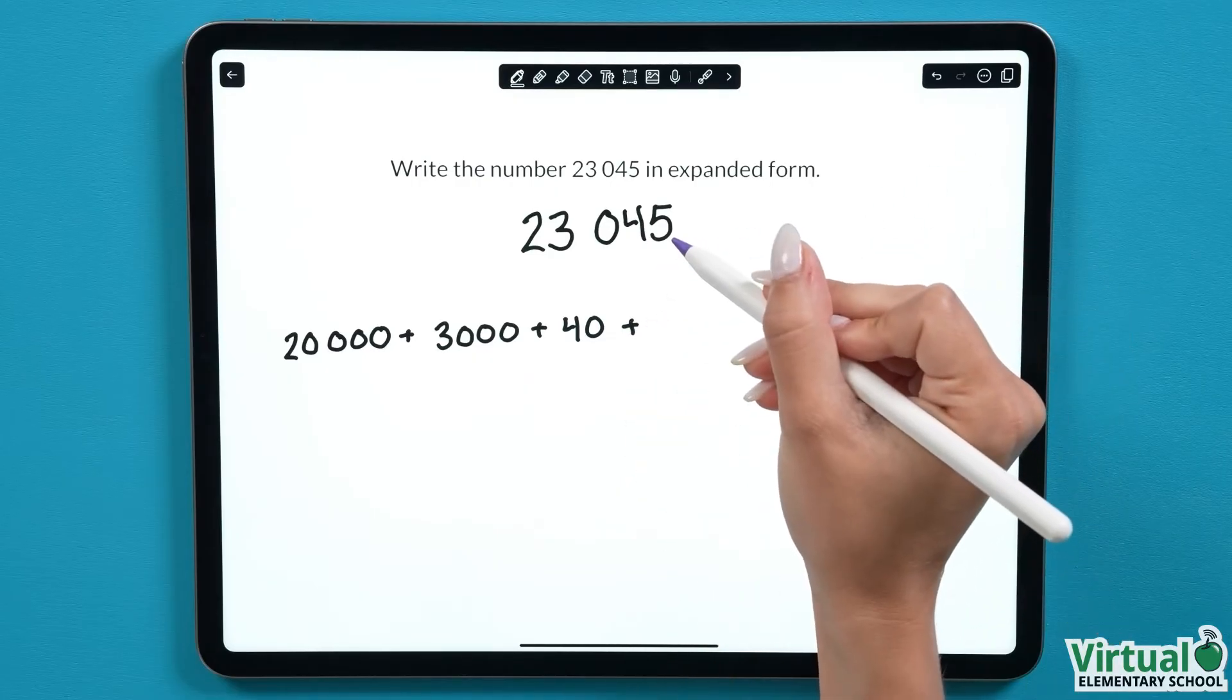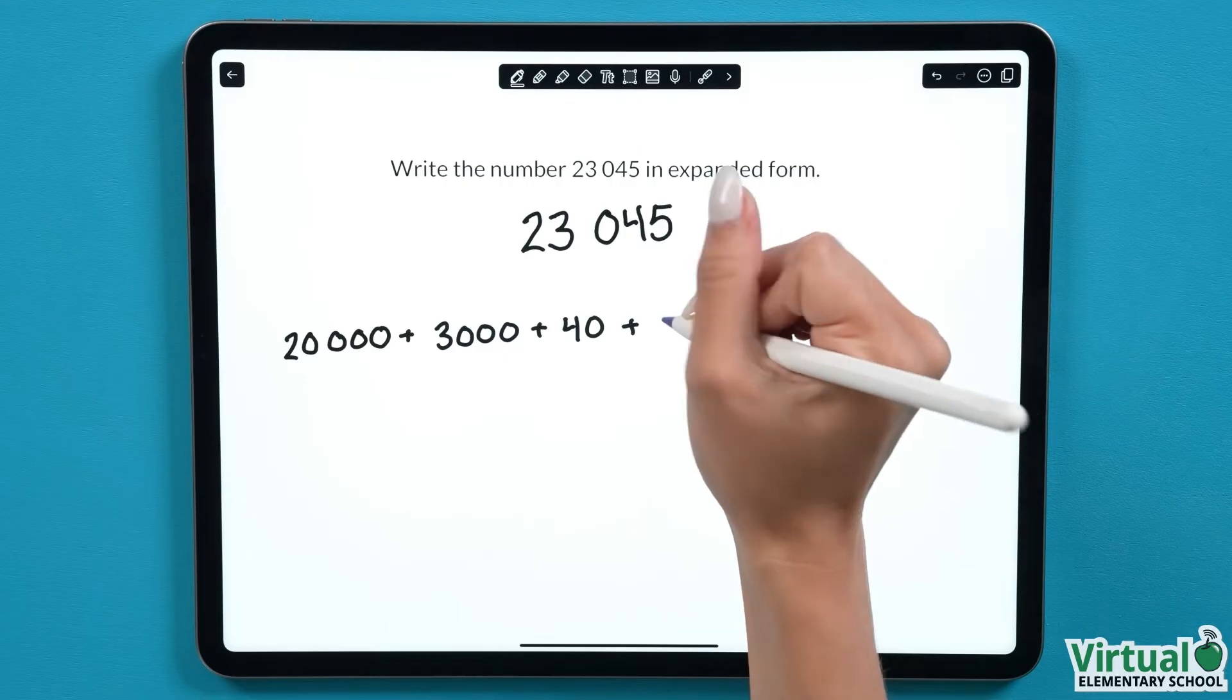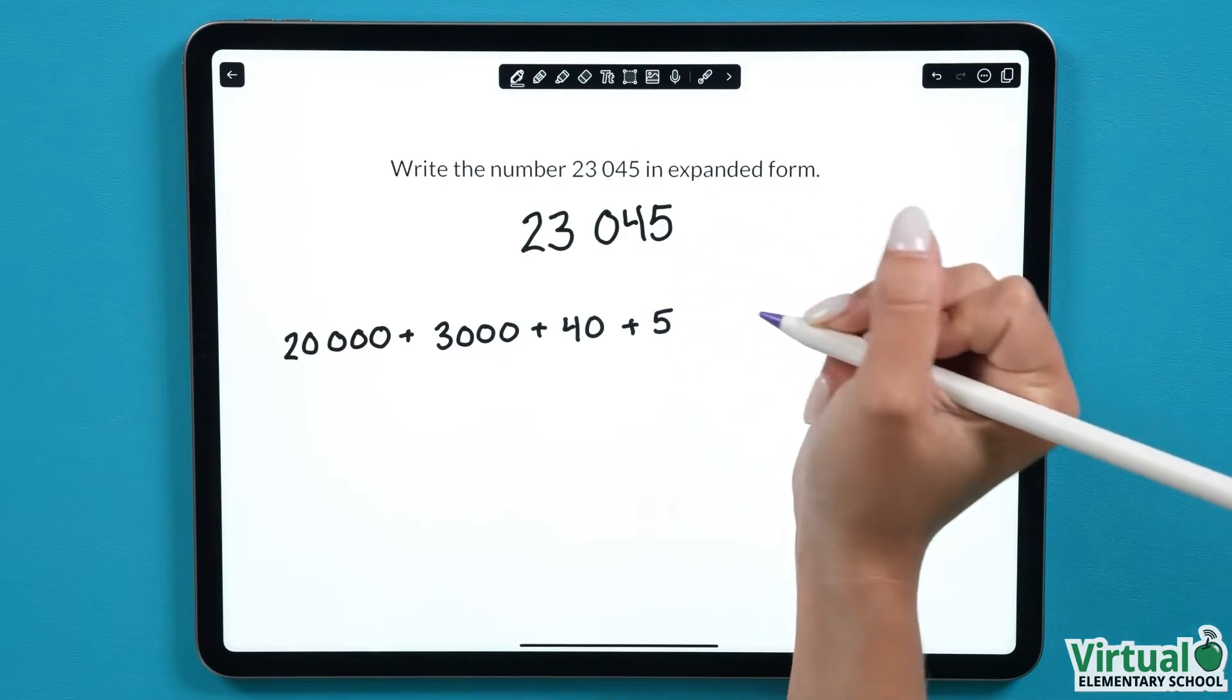The 5 is our last number we need to work with and it's in the ones column, so we write this just as a 5. Now that we've written out our expanded form using numbers, we can also write it out using words.